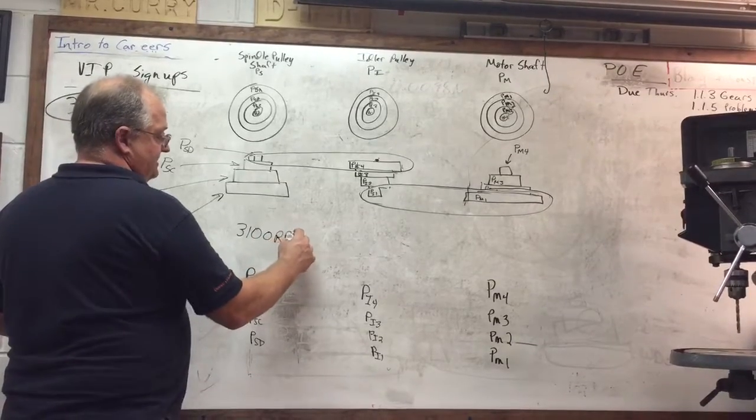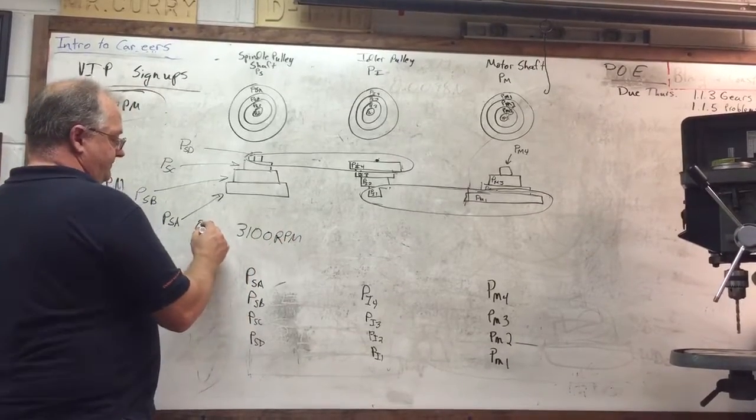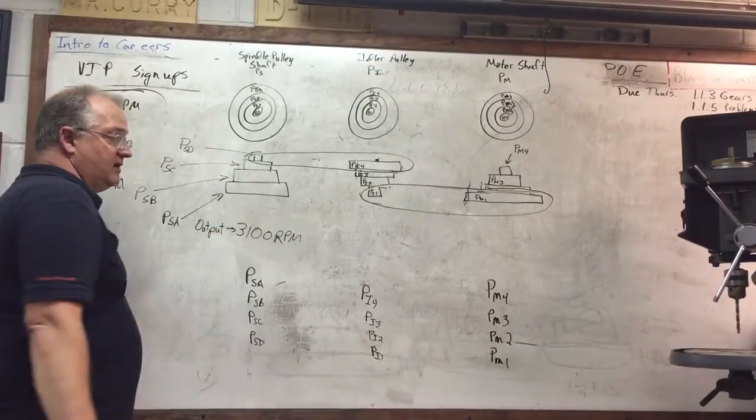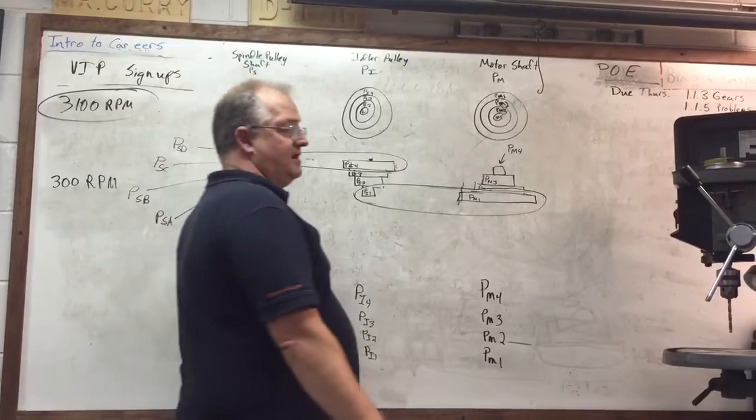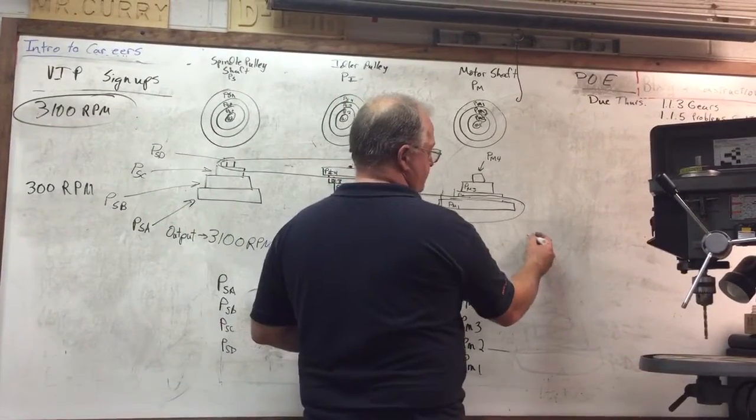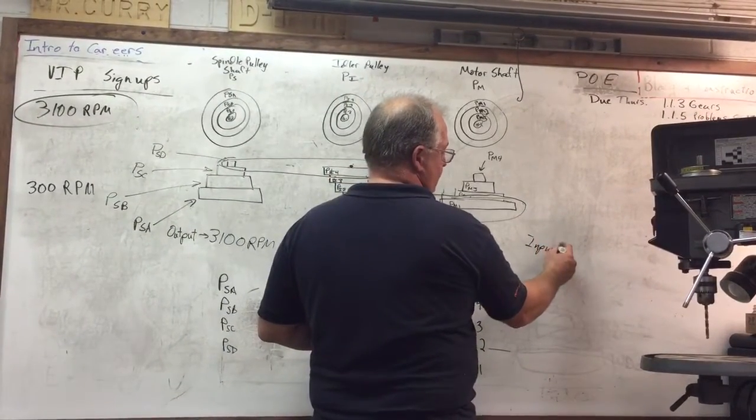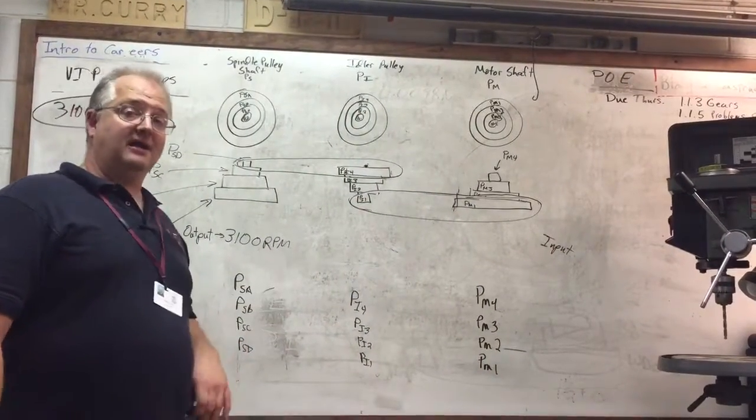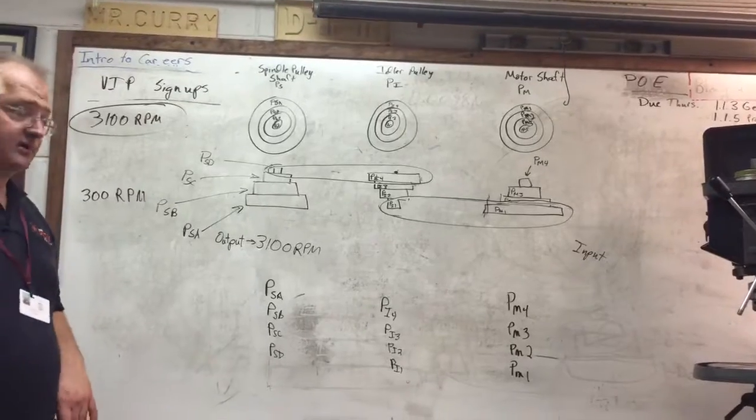Here, that is our output. Our output here is 3,100 RPM. We want to use what we know to determine our input. So in the next videos, I will go ahead and show how we do our calculations here with our input.